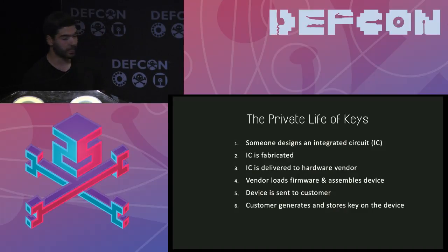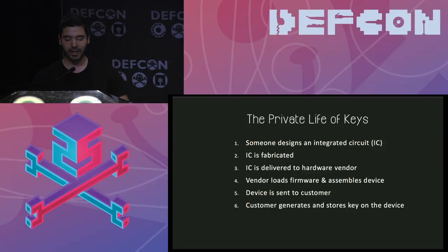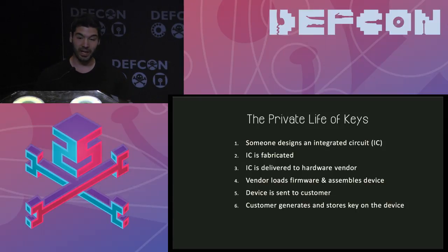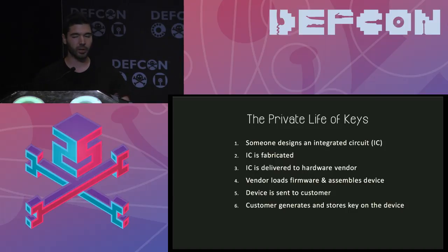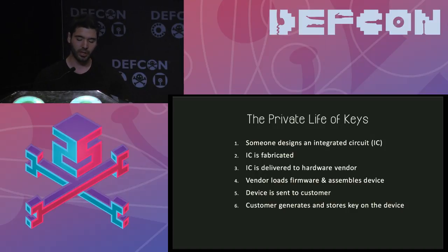To begin with, let's think about a private key and the public key - how do we generate that? Someone somewhere in a development design house designs an integrated circuit, which is then fabricated at a foundry somewhere else. This integrated circuit is delivered to the hardware vendor that ordered it. The vendor loads its firmware and assembles the actual device that uses the integrated circuit, and then the device is sent to the customer.